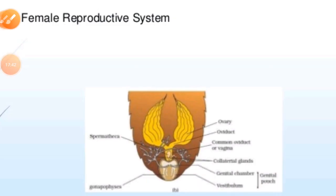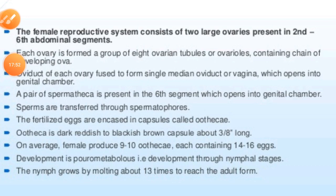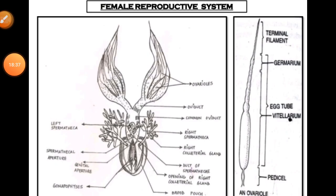Now for the female reproductive system: it consists of two large ovaries present in the second to sixth abdominal segments. Each ovary is made of a group of eight ovarian tubules or ovarioles, containing a chain of developing ova. The oviducts of each ovary unite into a single median oviduct, also known as the vagina, which opens into the genital chamber. A pair of spermatheca is present in the sixth segment, which opens into the genital chamber.